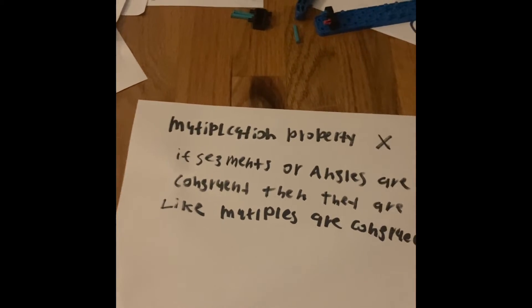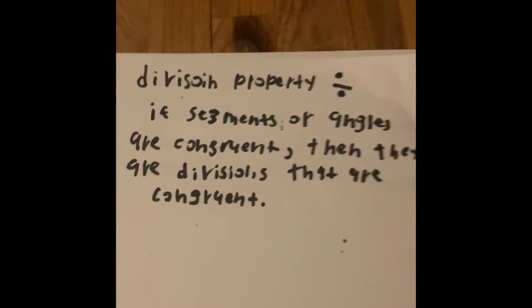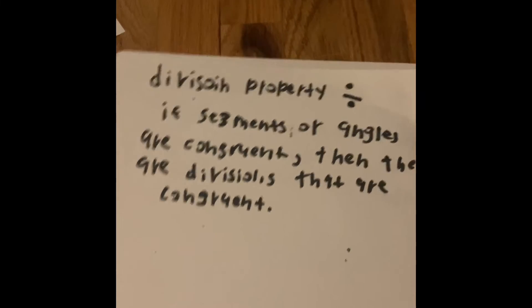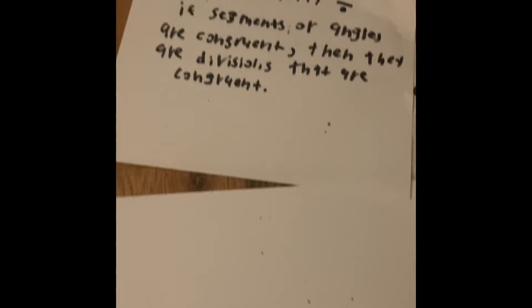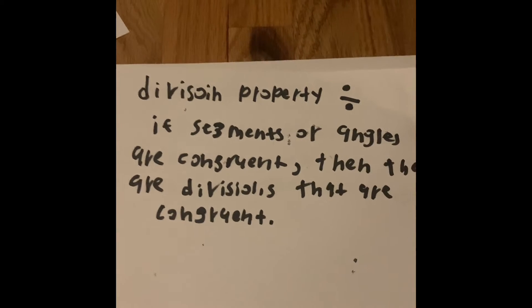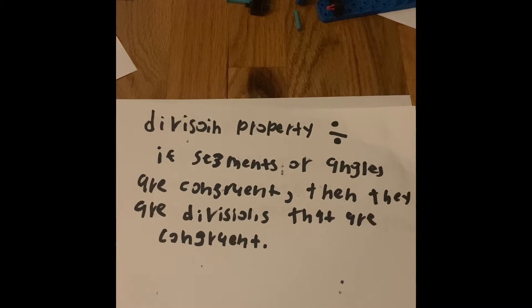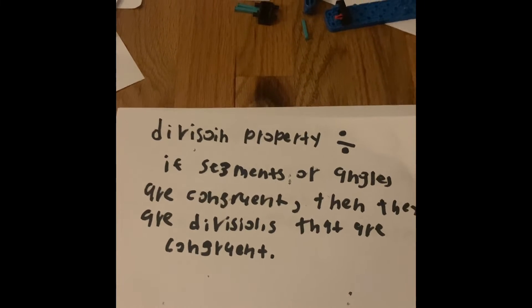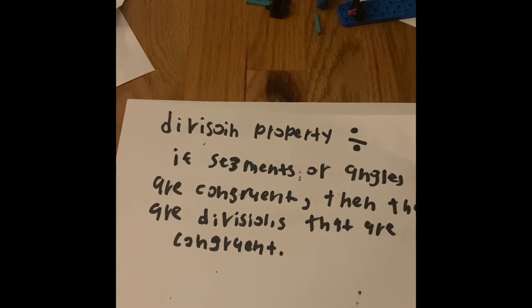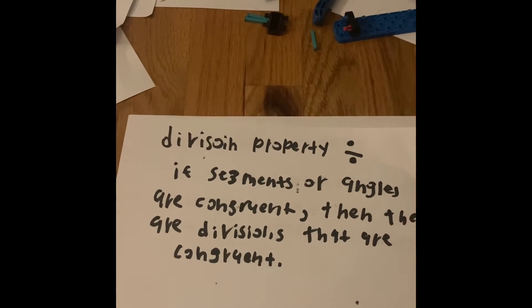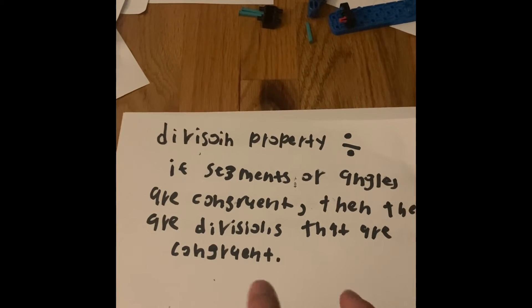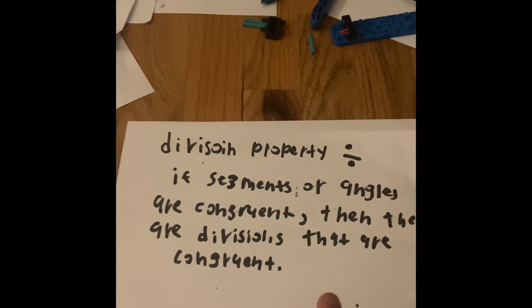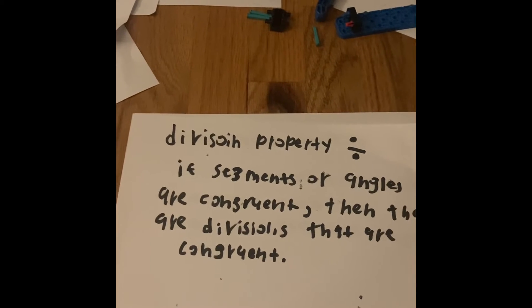We are now done with multiplication. Now let's look at the Division Property, the opposite of multiplication. With the Division Property, if segments or angles are congruent, then their divisions are also congruent. Unlike multiplication where we build up to bigger congruent things, with division you take a big congruent measurement and find the smaller congruent parts within it.